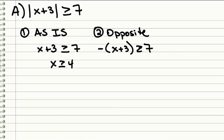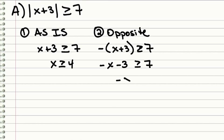So under the as is, if we subtract 3 from both sides, we get x greater than or equal to 4. The opposite, we're going to distribute the negative 1, so we get a negative x minus 3, greater than or equal to 7. Add 3 to both sides, we get the opposite of x, greater than or equal to 7. But remember, we need to divide both sides by this negative 1 to get the x by itself. And when you divide, that inequality sign has to change. So it's no longer greater than, it's now less than.